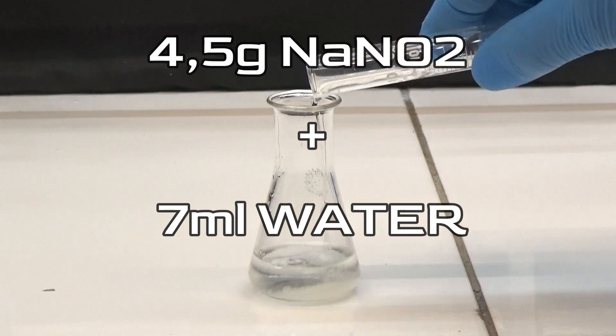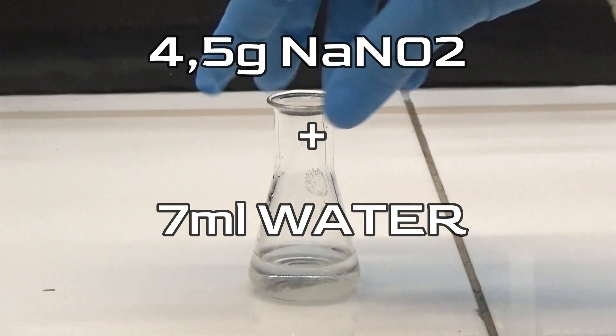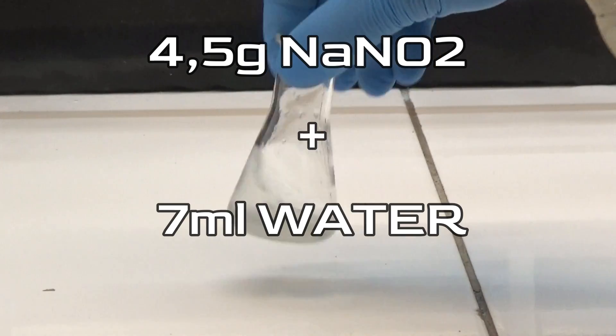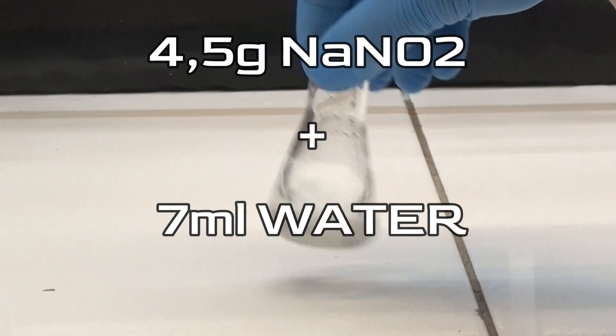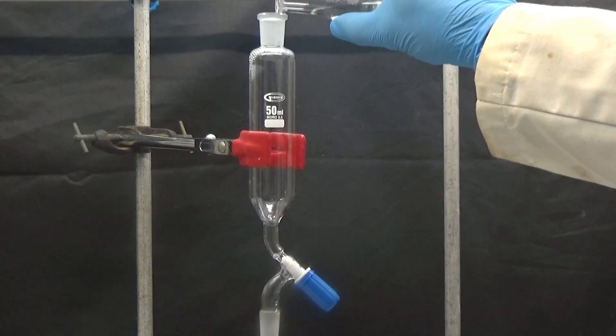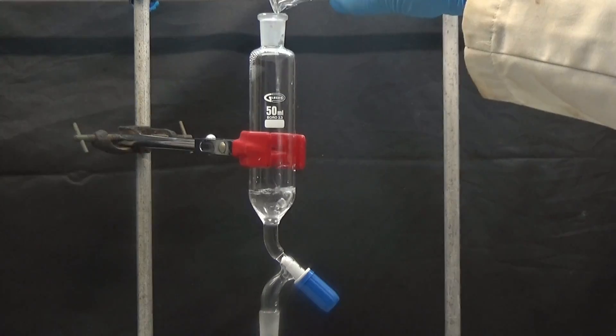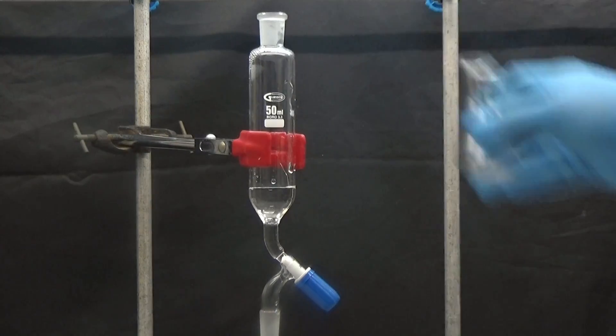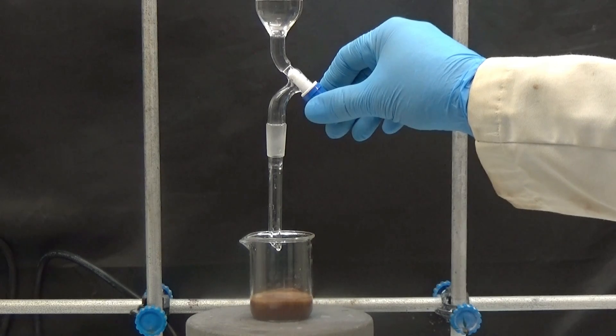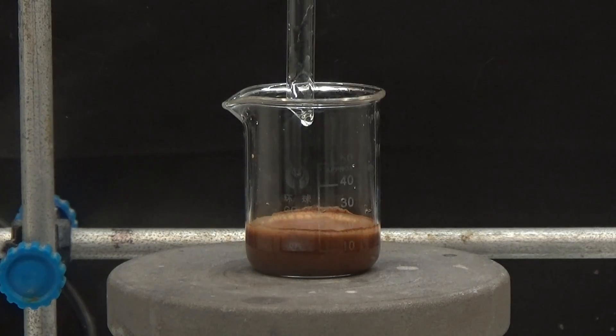Prepare a solution of sodium nitrite in 7 ml of water while the 1,3-indanedione is dissolved. After 30 minutes, pour the nitrite solution into an addition funnel that has a needle valve. We slowly add the nitrite solution to the indanedione solution.